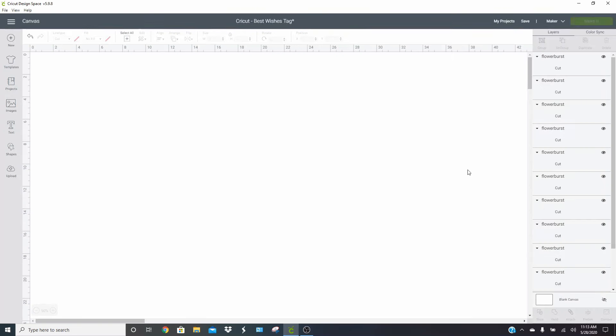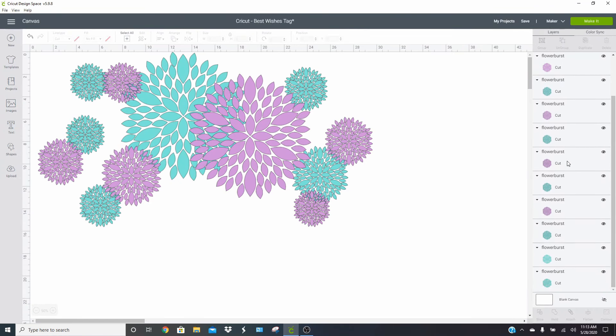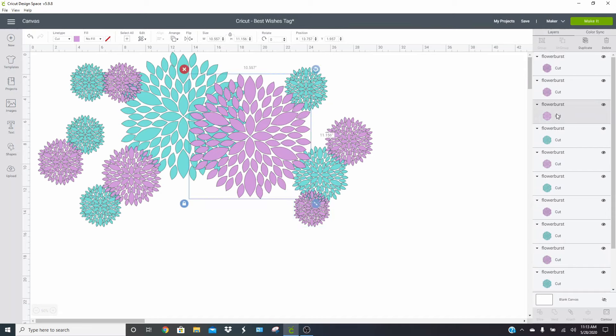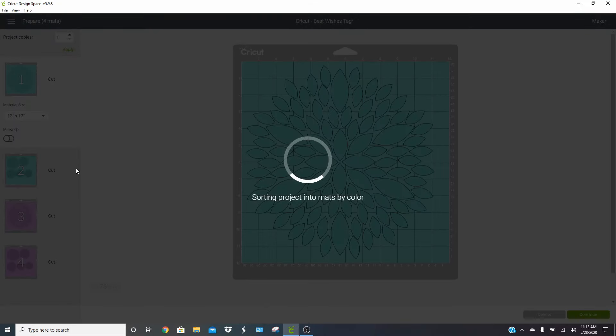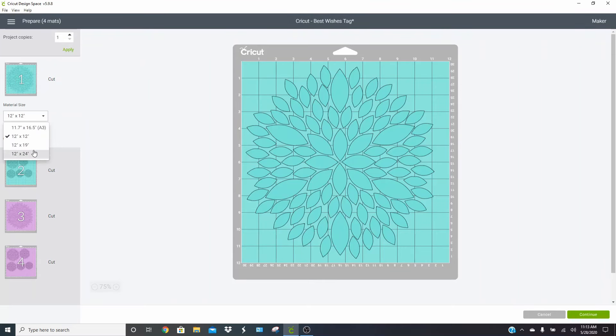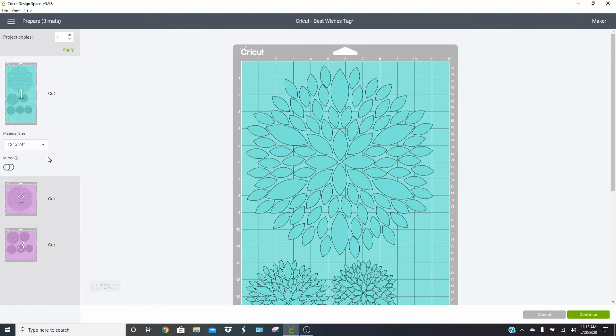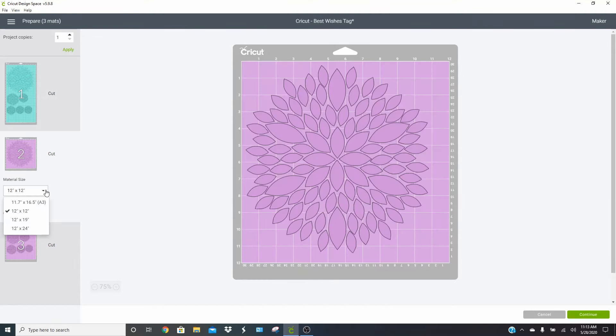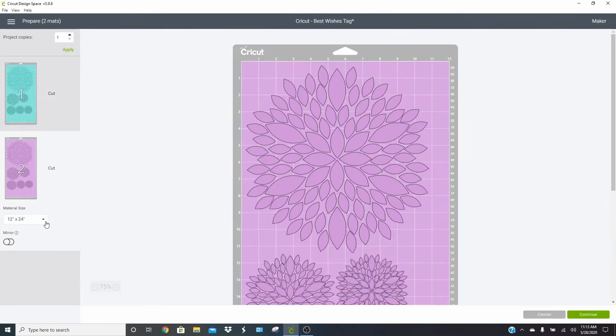Nothing seems to be attached, so it could just be design space being a little bit funny, which happens from time to time. Just click make it again and we'll see if it will fix itself because a lot of times it does and it looks like it did, but we'll just double check. So then we'll just change this one down here to 12 by 24. And as you can see, it was just a glitch in design space.